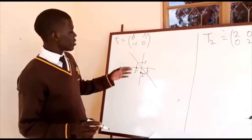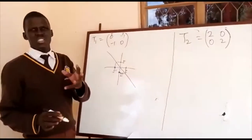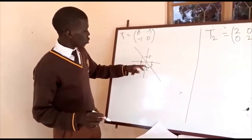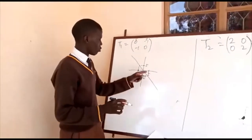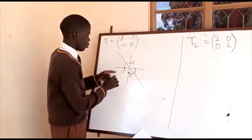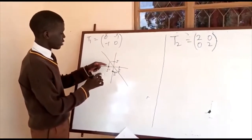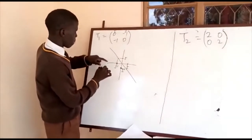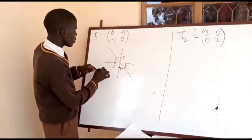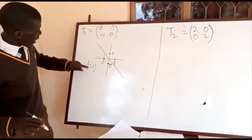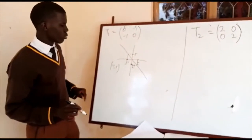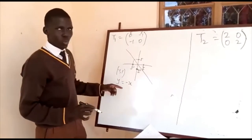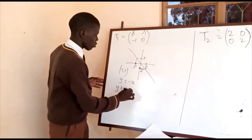This line of reflection — how do we find it? If we pick a point on the line, let's take the point negative one, negative one. We can see that X is negative and Y is positive, therefore the line is Y equals negative X.